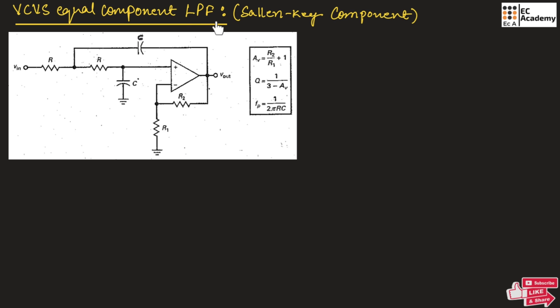Since it allows only low frequencies and high frequencies will be attenuated, that is why it is known as low pass filter. Here, the quality factor can be given as Q is equal to 1 divided by 3 minus AV.